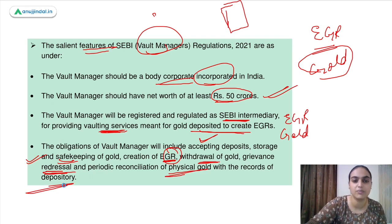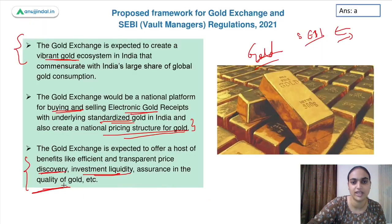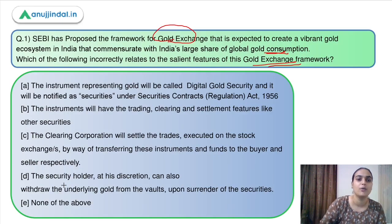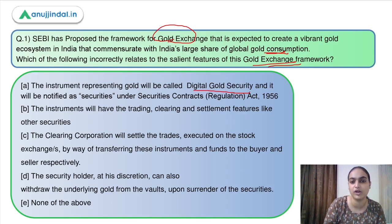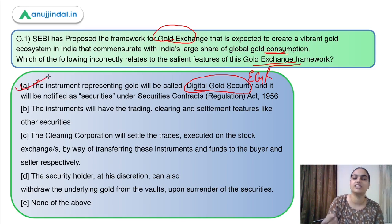Moving back to the question — we had to identify the incorrect statement. The first statement itself is incorrect: it says the instrument representing gold will be called 'digital gold security.' No — it should be EGRs, electronic gold receipts. So this is incorrect. Answer is option A.